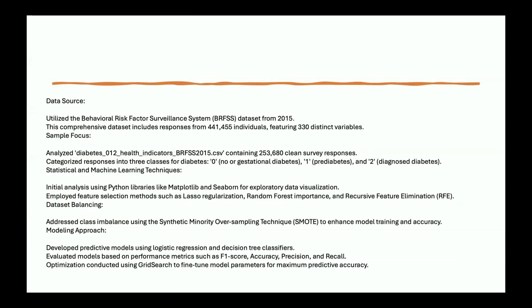In this slide, we look at the methods we used for our study. We used the 2015 dataset from the Behavioral Risk Factor Surveillance System, which includes over 250,000 clean survey responses. This large amount of data gave us a great base to examine how diabetes is connected to various health indicators and income levels. We also faced a challenge with an imbalance in our dataset — mainly there were many more non-diabetic responses.